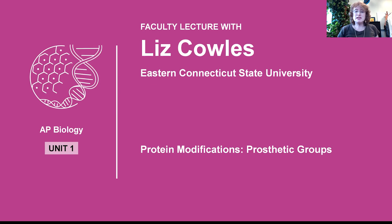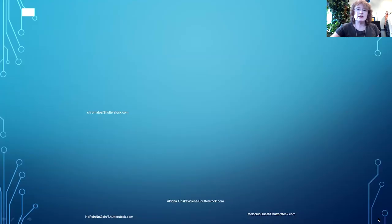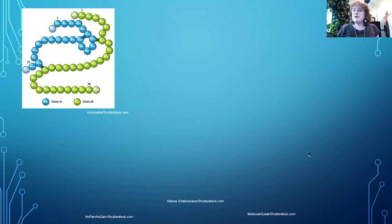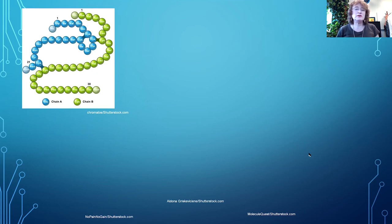In terms of protein modifications, one of the things we can look at are what are called prosthetic groups. But first let's take a look at protein structure. We start with the primary structure, which is the amino acid sequence. This is dictated by the nucleotides present in a gene in the DNA. This picture shows insulin.